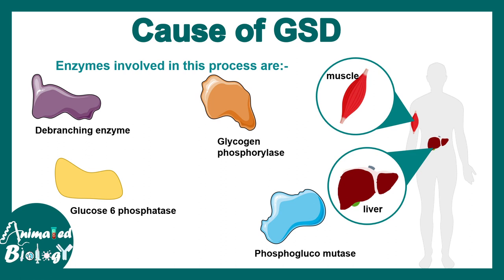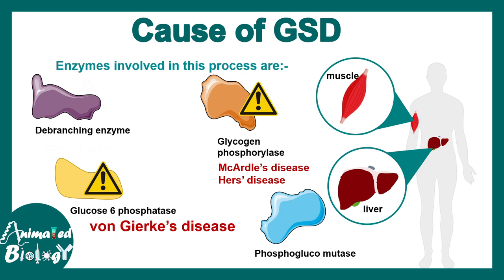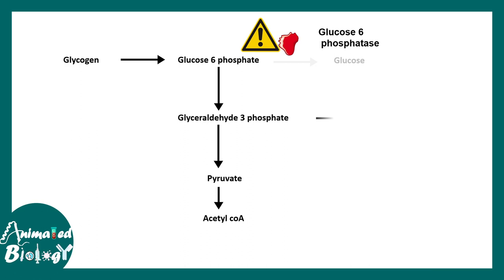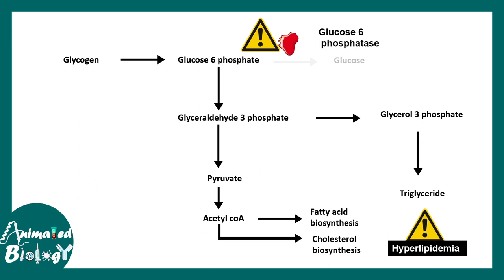For Von Gierke's disease, glucose-6-phosphatase is the key enzyme, while for Cori's, McArdle's, and Hers' disease, other enzymes are responsible. Since glycogenolysis is disrupted, the majority of glyceraldehyde-3-phosphate can either go through the normal glycolysis pathway or form triglyceride via glycerol-3-phosphate. Too much acetyl-CoA is produced, and that acetyl-CoA would be utilized in fatty acid biosynthesis or cholesterol biosynthesis, leading to too much triglyceride genesis and a hyperlipidemic or dyslipidemic situation.